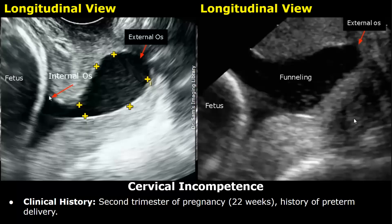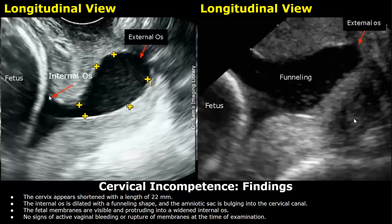Now we have an obstetric setting — a case of cervical incompetence. Clinical history: second trimester of pregnancy with a history of preterm delivery. Findings: the cervix appears shortened with a length of 22 millimeters. The internal os is dilated with a funneling shape and the amniotic sac is bulging into the cervical canal. Fetal membranes are visible and protruding into a widened internal os. No signs of active vaginal bleeding or rupture of membranes at the time of examination.